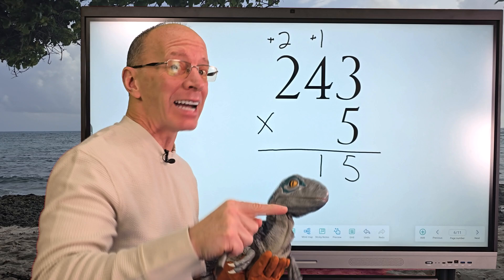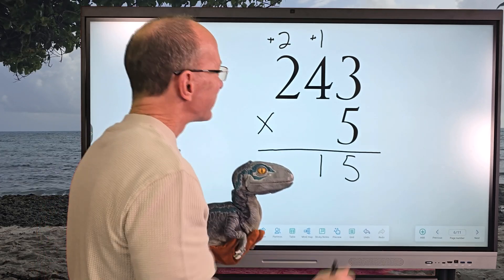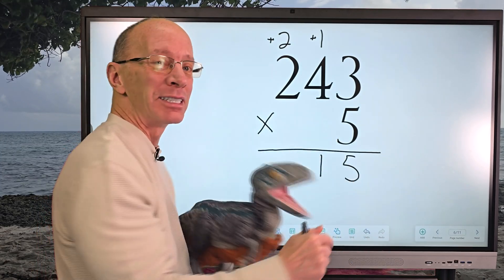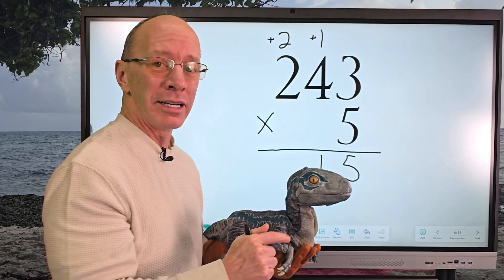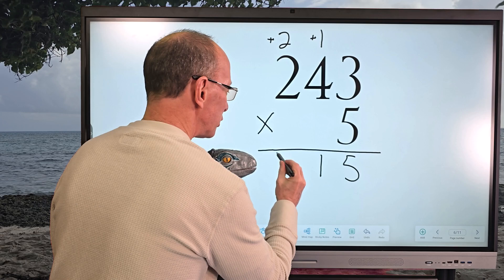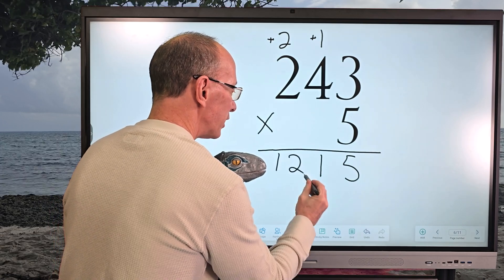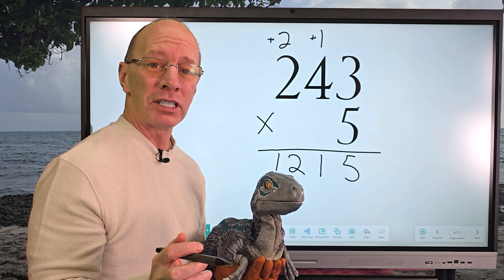So now I'm going to take the five times the two, which is ten. Plus the two is twelve. So I put twelve right here, and our answer is 1,215. Ready to do just one more? Whoa! Yeah, let's do it! All right, I'm going to go to our next problem.